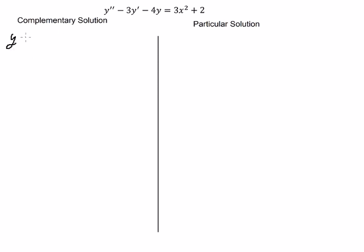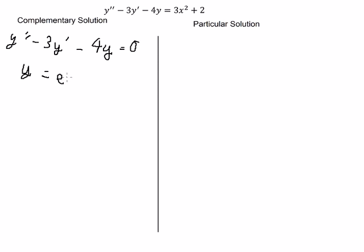For the complementary solution, we have the second derivative minus three times the first derivative minus four y, equal to zero. In this situation, we put y equal to e to the power of lambda s — and note that the variable should be s, not t.